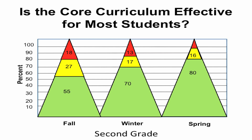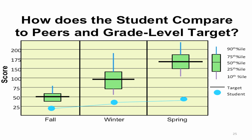If a student was struggling in a classroom, and most of the other students are responding to the core curriculum, that would be an indication the student might meet criteria for a print-based disability. With screening data, individual student performance can be compared with the norm group shown here in the box plots and the target score, which is the black line.